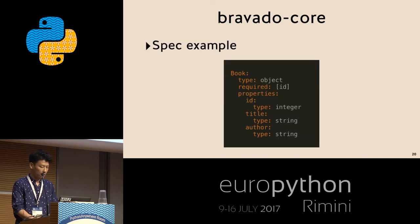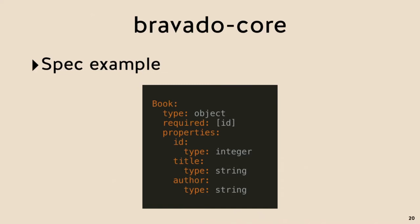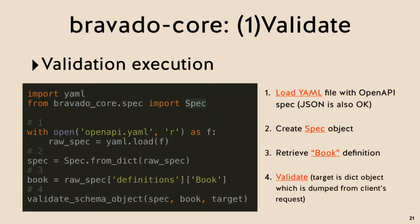Let's see an example. I'll use a schema called 'book' — an object type with properties: ID as integer, title as string, and author as string, where ID is a required property. To use bravado-core: first, load the YAML file with your OpenAPI spec; second, create a bravado-core spec object using the from_dict method; third, retrieve the book definition from the loaded spec; and finally, call validate_schema_object to validate your data.